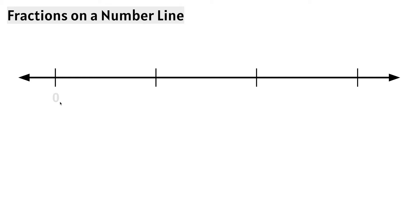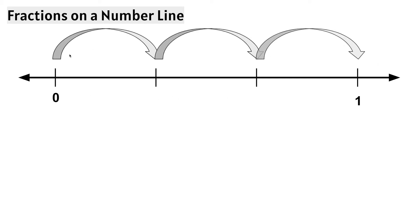This number line also has the whole numbers 0 and 1, but we notice there are more tick marks. We need to count how many spaces there are between the 0 and the 1, because 0 and 1 are the whole numbers. Let's count: 1, 2, 3. There are 3 spaces between the 0 and the 1, which means we're working with a denominator of 3. This tick mark represents 0, and another way to say 0 on this number line is 0 thirds.